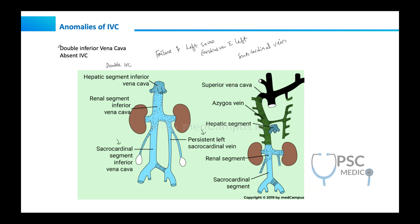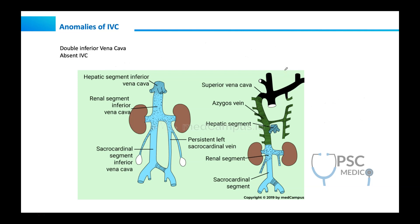The other anomaly is absent inferior vena cava — a complete absence of IVC. This condition arises when the right sub-cardinal vein fails to make a connection with the liver. Instead, if the right sub-cardinal vein directly shunts its blood into the right supra-cardinal vein, there is no need for IVC formation, resulting in an absent IVC. This condition is depicted in the image shown.